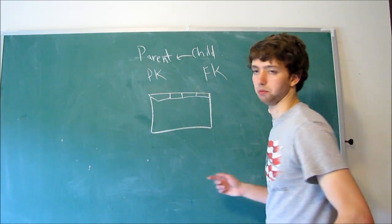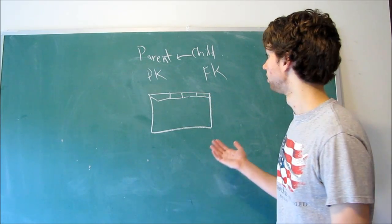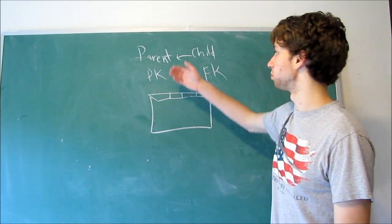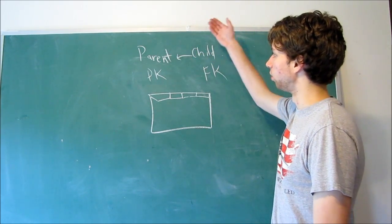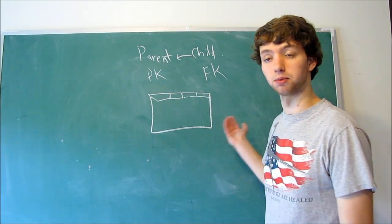We have the user ID, the password, the username, whatever else. All those are just columns within a table. We don't have to worry about a parent or a child because we're not making any relationships across multiple tables.